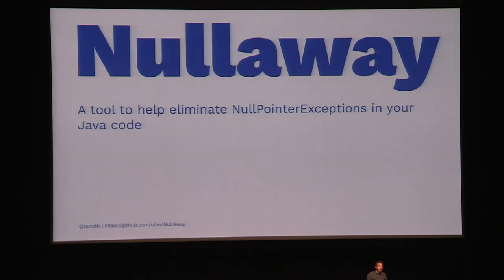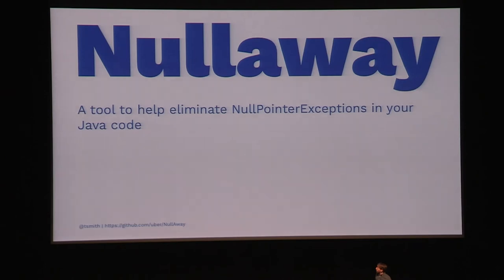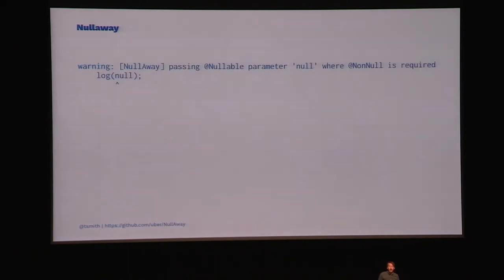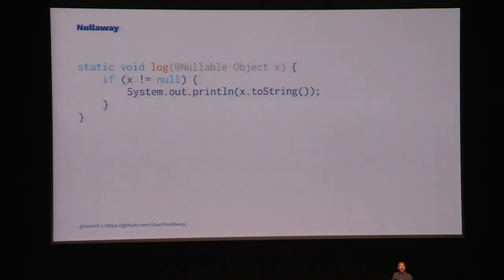ErrorProne makes it easy to write new checkers for error types. When we looked at the benefits of Kotlin and Swift, one obvious win was the way they handle nullability and how they throw that error in your face at compile time. Using ErrorProne as the basis of this checking framework, we wrote and open sourced a tool called NullAway. It's specifically designed to help solve that billion dollar mistake and give you Kotlin's nullability in Java, and it's fast — it can run on every build of your app with little overhead. In a quick example, we have a method that takes X and prints it out, and in this case we're sending null. By default, NullAway assumes that all unannotated methods are non-null, so at build time NullAway will halt and alert us to the null pointer exception issue.